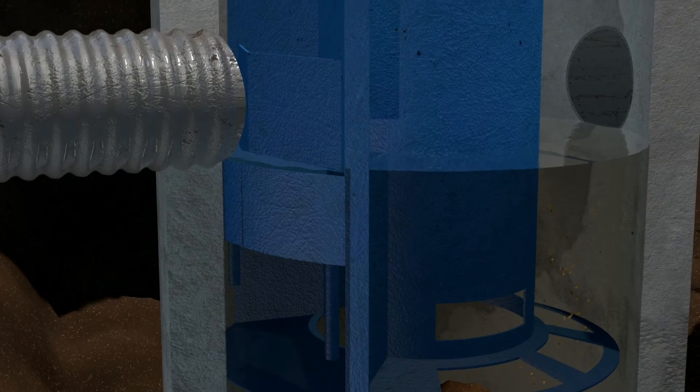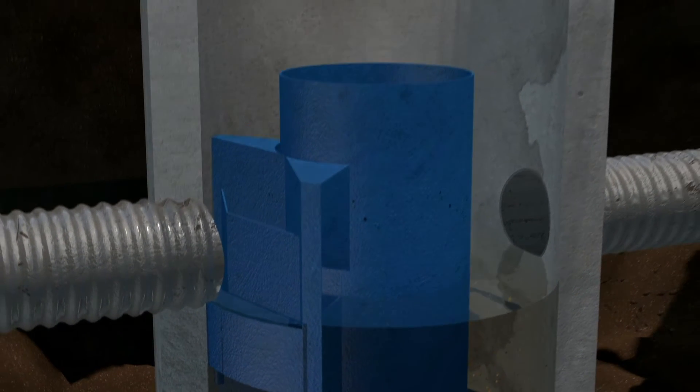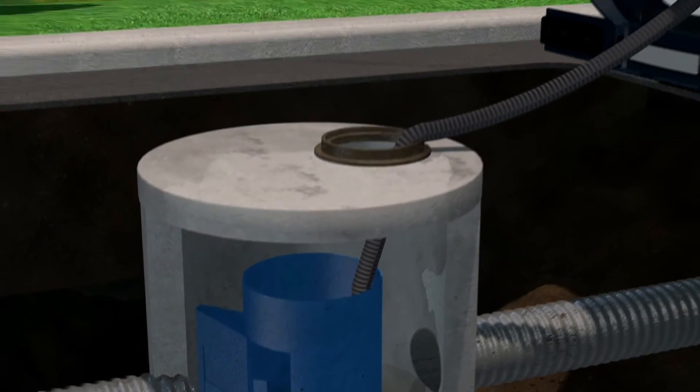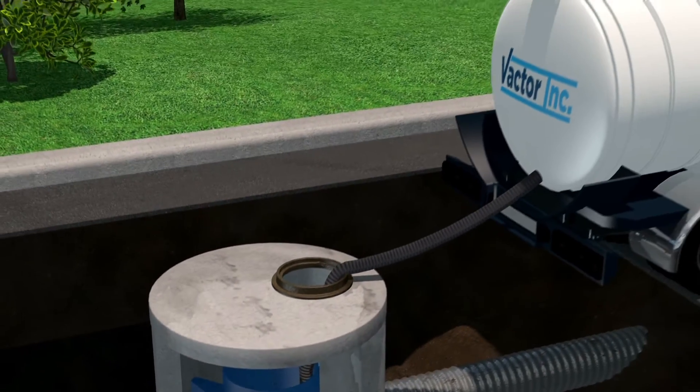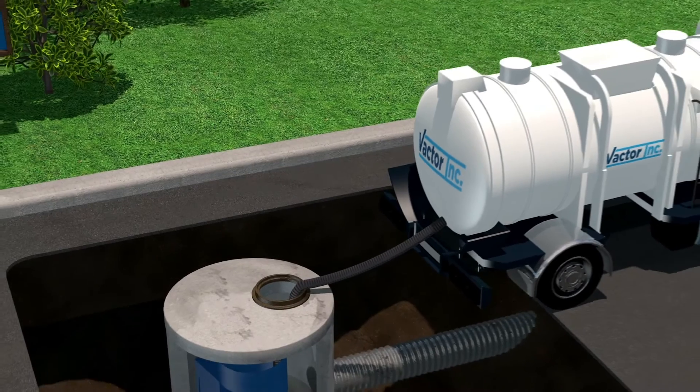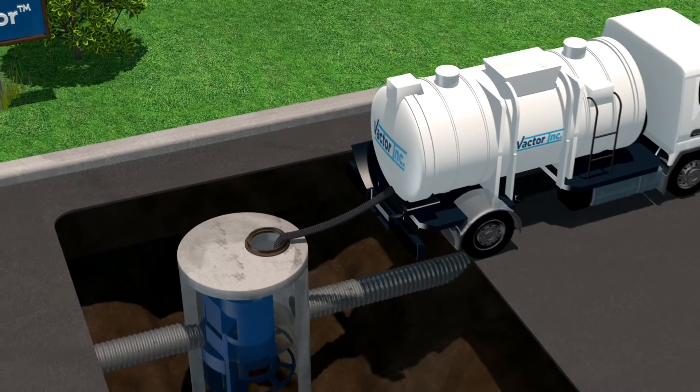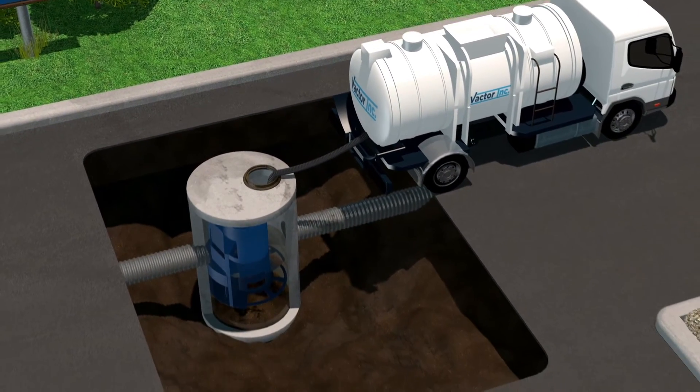Because all material is contained within the sump and center cylinder, maintenance of the Cascade Separator is extremely simple, and can be performed from finish grade via a vector hose through the center cylinder.